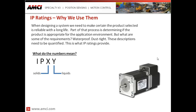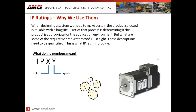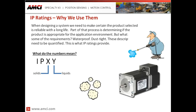What do the numbers mean? What we typically see is IP followed by two numbers, represented here as X and Y. The first number represents the protection level from solids — it tells us whether that enclosure protects from solids as large as a human hand or a finger, or as small as a grain of dust. The second number informs us of the protection level of that enclosure towards liquids, whether that liquid is something as gentle as mist or falling rain, or as extreme as a high-pressure wash.